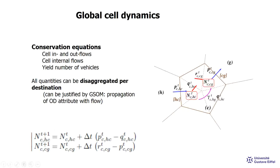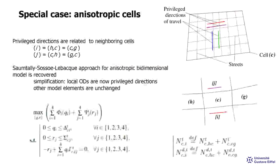Looking at the global cell dynamics: you have two kinds of conservation equations — those pertaining to what enters and exits the cell (inter-cell, blue flows in the illustration) and those pertaining to movement inside the cell (intra-cell, magenta flows). The conservation equations themselves carry no mystery. Everything is easily disaggregated by destination.